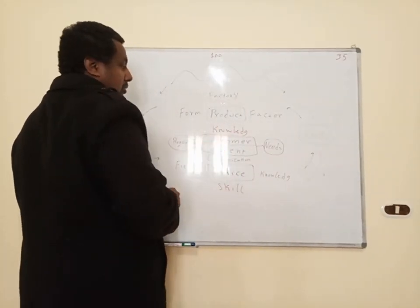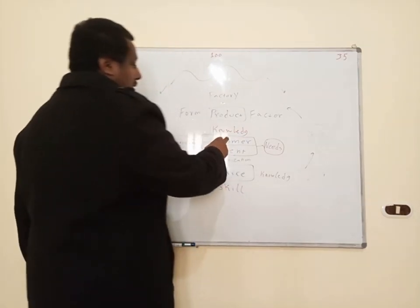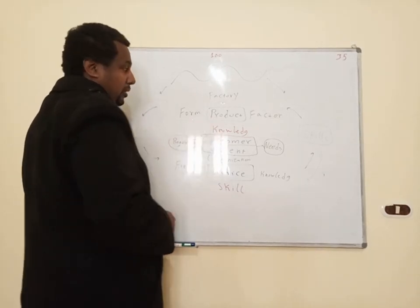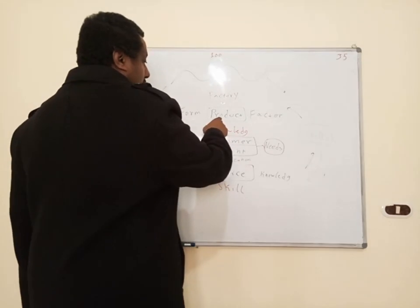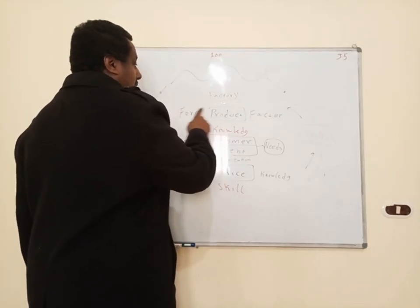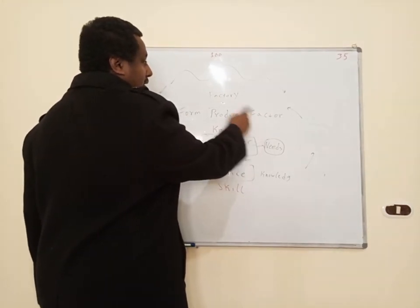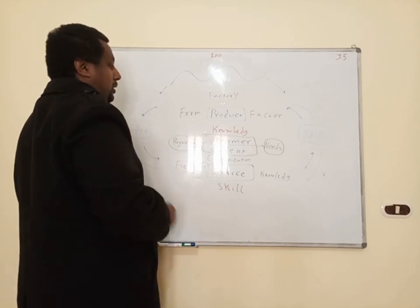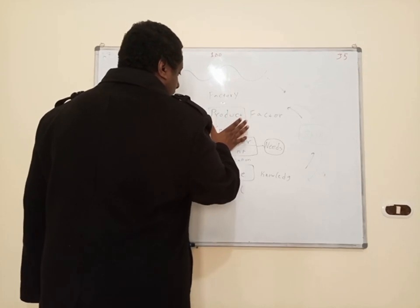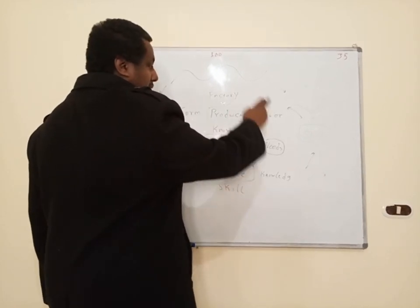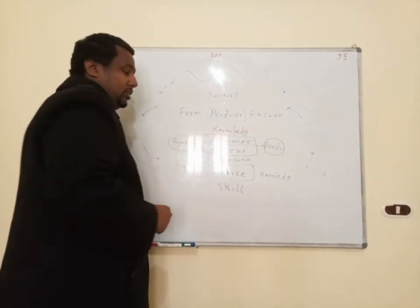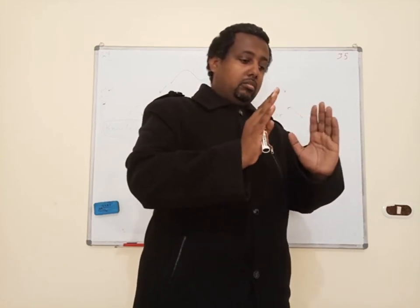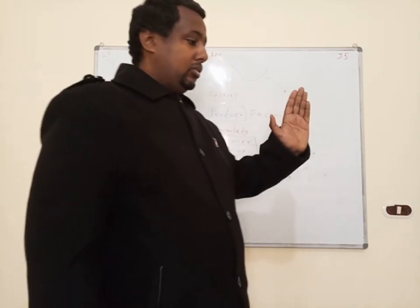Let's start with the customer. The customer requires products. A product is a form factor that is made in a factory. Everything related to the customer is based on knowledge — from the customer's view to the people working in the factory, up to the product itself.